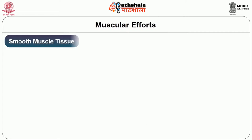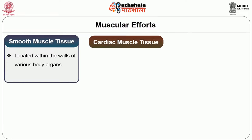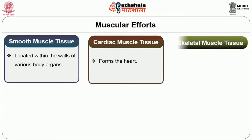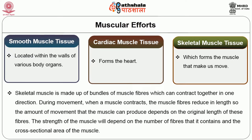There are three different types of muscle tissue in our body: smooth muscle tissue located within the walls of various body organs; cardiac muscle tissue, which forms the heart; and skeletal muscle tissue, which forms the muscles that make us move. Skeletal muscle fibers are made up of bundles of muscle fibers that can contract together in one direction during movement. When a muscle contracts, fibers reduce in length, so the amount of movement depends on the original length of those fibers. Muscle strength depends on the number of fibers and the cross-sectional area of the muscle.